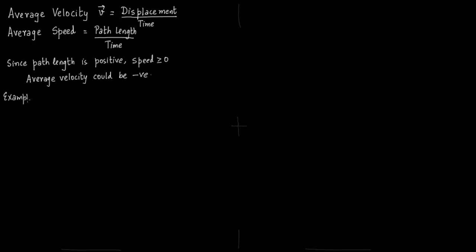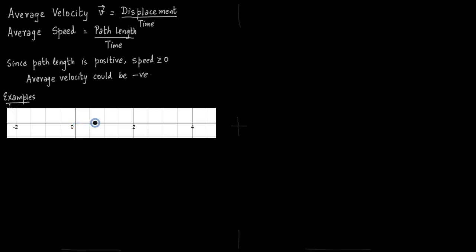Let us see some examples. These examples will illustrate the difference between speed and velocity. So say you are going from 0 to 4 and then back to 0.